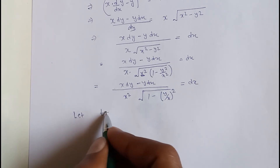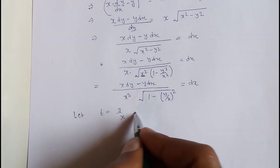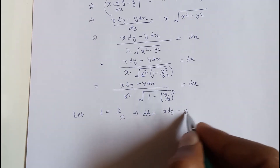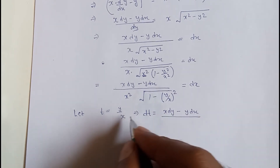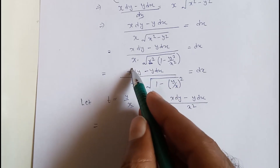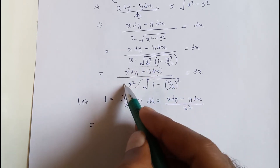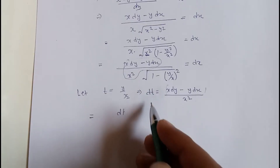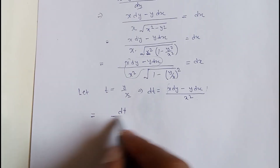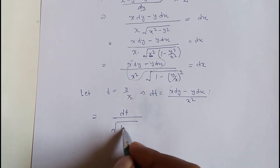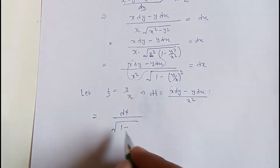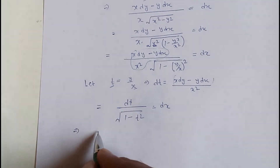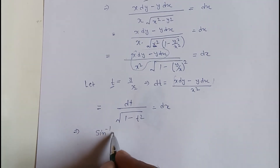Let t = y/x. Then dt = (x·dy - y·dx)/x². Substituting, we replace the numerator expression with dt, and the denominator becomes √(1 - t²), since y/x = t, so the equation becomes dt/√(1 - t²) = dx.